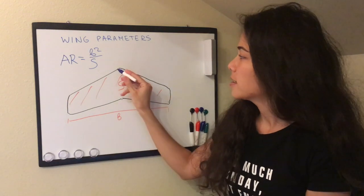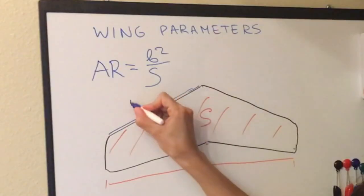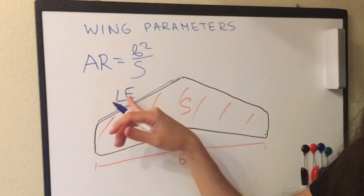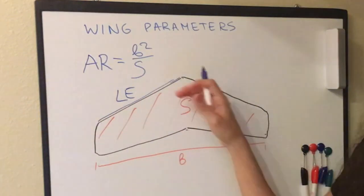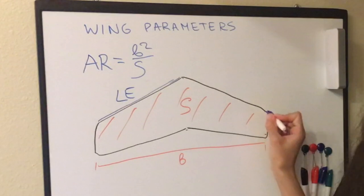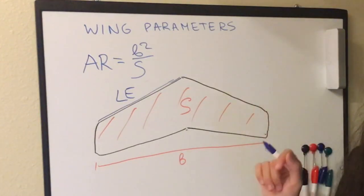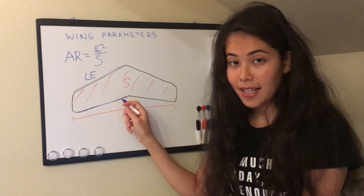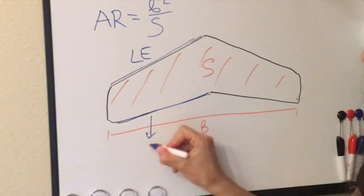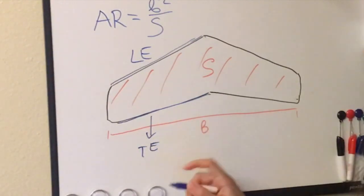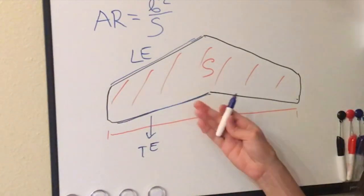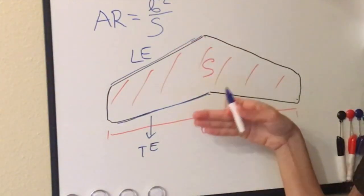Now let's continue looking at the wing. We describe this edge here as the leading edge, denoted by capital LE. It's called the leading edge because this is the first edge of the wing that hits the airstream when the aircraft is flying. And the second edge is called the trailing edge, denoted by capital TE — meaning the edge that follows the leading edge.